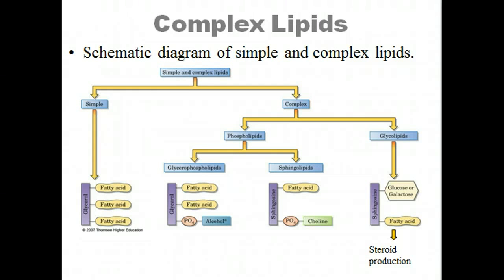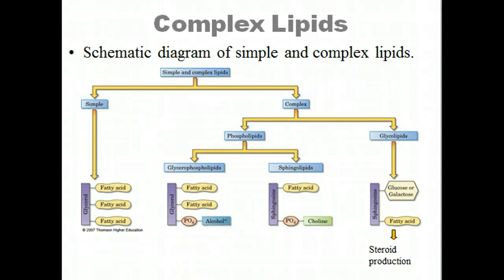Lipids have many functions in the body in addition to providing energy. For example, cholesterol is the most abundant steroid in the human body and also the most important. Cholesterol is a plasma membrane component of all animal cells, as well as the precursor of all steroid hormones and bile acids. Steroids are definitely complex lipids.